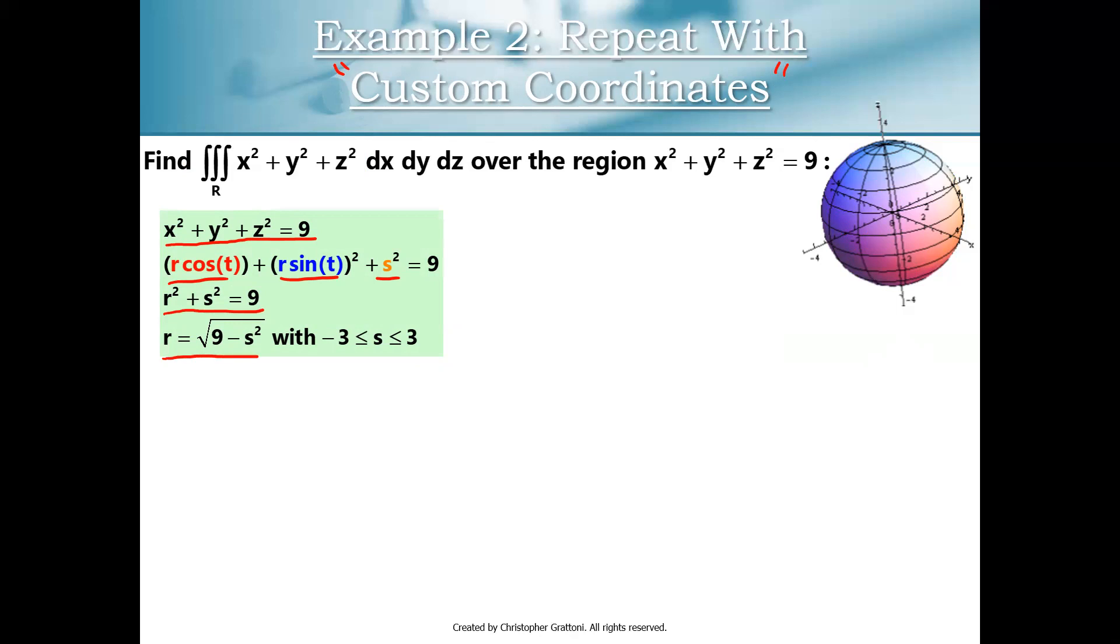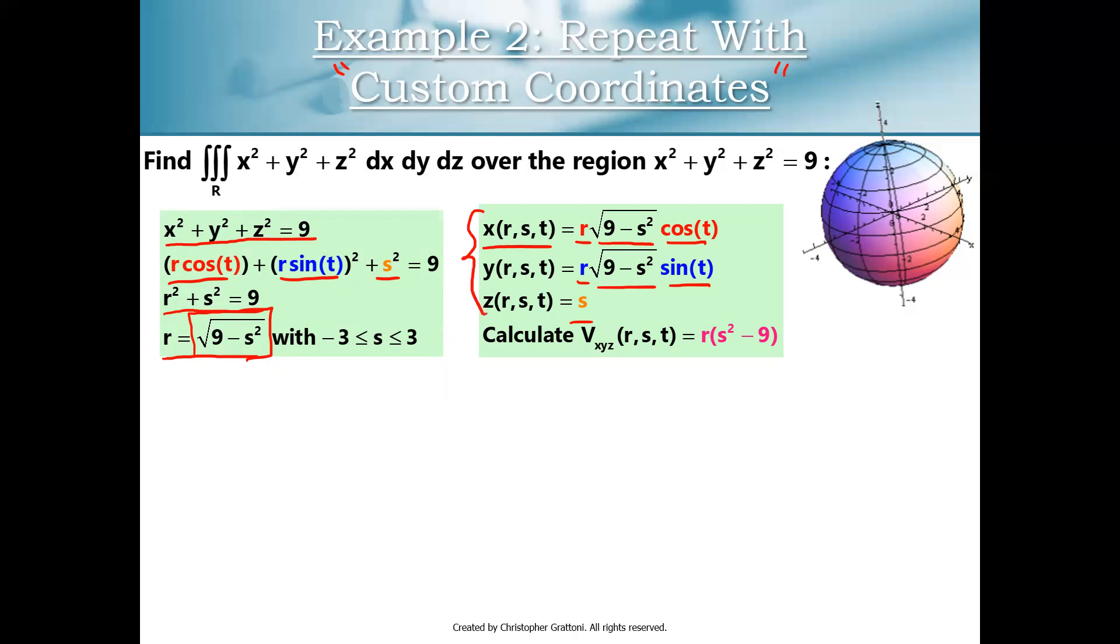Solve that for r, you get the square root of 9 minus s squared. Now in the previous example, we incorporated the square root of 9 minus s squared as the top limit of integration for our dr integral. In this case we're going to incorporate the square root of 9 minus s squared into our parameterization. So when I define my x of r, s, t, instead of using standard cylindrical coordinates here, you can see I'm writing r times the square root of 9 minus s squared cosine t, r times the square root of 9 minus s squared sine t, z is the same, and now I've changed my coordinates. This is not cylindrical coordinates anymore. This is my own custom coordinate system.